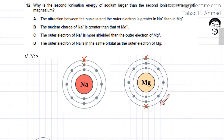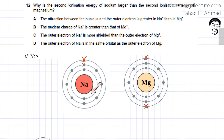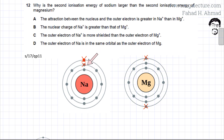That electron would be very far from the nucleus and well shielded, so the attraction of the nucleus for that electron would be very weak. But in the case of sodium, removing the second electron — that electron is in an inner shell, closer to the nucleus, with a lesser shielding effect.